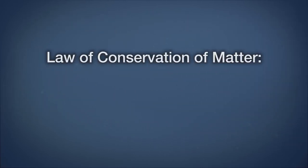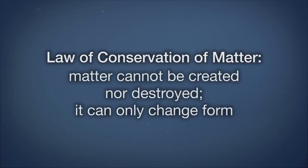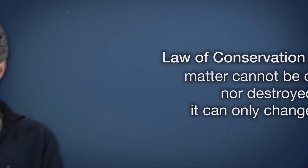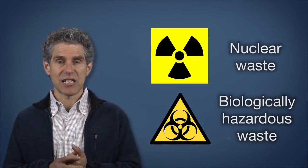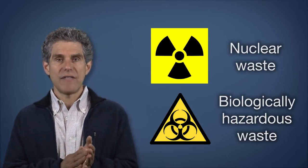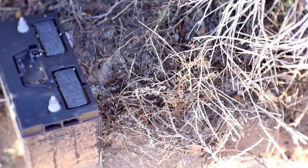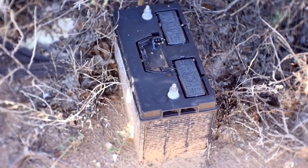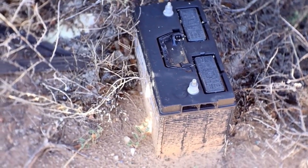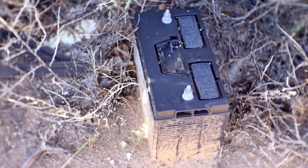The law of conservation of matter states that matter cannot be created or destroyed — it can only change form. This law has many environmental implications. For example, it tells us that we cannot easily dispose of hazardous waste. Consider the heavy metal lead, which is common in the conventional, older-style car battery. Due to the conservation of matter, the lead in that battery won't just go away. We have to recycle it or put it in a safe place if we don't want it to escape to the environment.